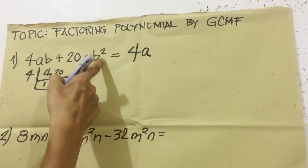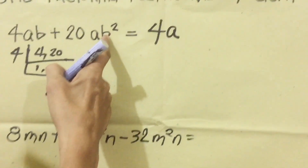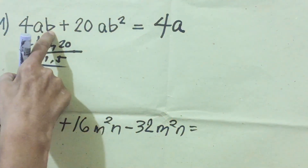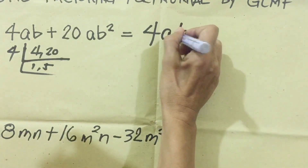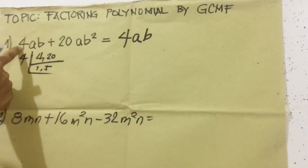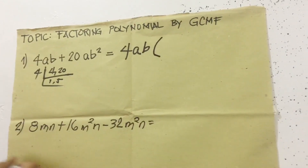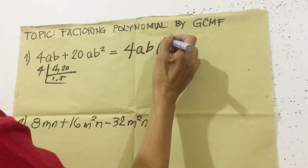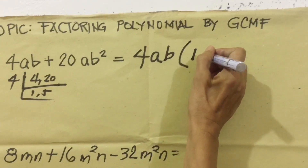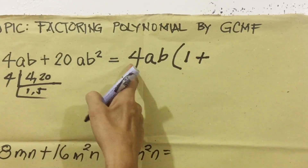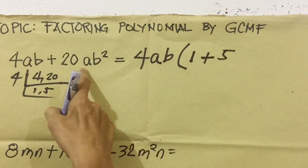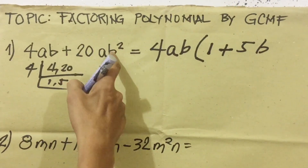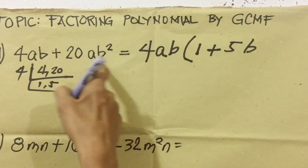There is also a 'b squared' here. We take the lowest exponent, so we don't take b squared — we take just 'b' since one term has no exponent on b. Then we divide. We put parentheses. 4ab divided by 4ab equals 1. 20 divided by 4 is 5. A divided by a cancels out. B squared divided by b — remember with exponents, we subtract: 2 minus 1, so b remains.